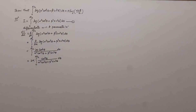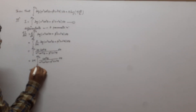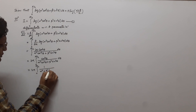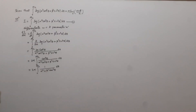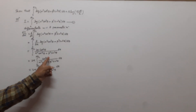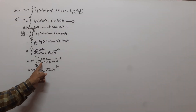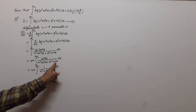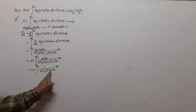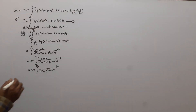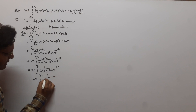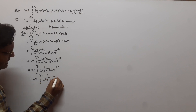We divide numerator and denominator by cos²θ. So we get the integral from 0 to π/2 of 1/(α² + β²sin²θ/cos²θ) dθ, which equals the integral from 0 to π/2 of 1/(α² + β²tan²θ) dθ. This can also be written as the integral from 0 to π/2 of 1/(α² + (β·tanθ)²) dθ.